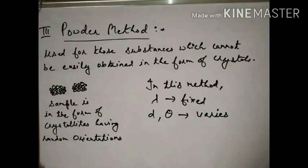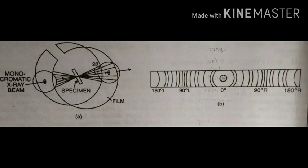In the experimental setup for the powder method, a monochromatic X-ray beam (single wavelength, so lambda is fixed) falls on the specimen in powdered form. Reflection and transmission occur at different angles. The pattern produced is in the form of concentric rings — unlike the first two methods where the pattern was in the form of spots. Here, the diffraction pattern appears as concentric rings.